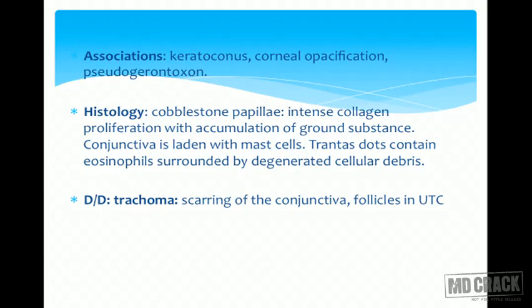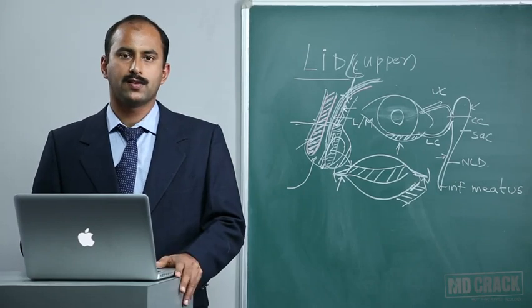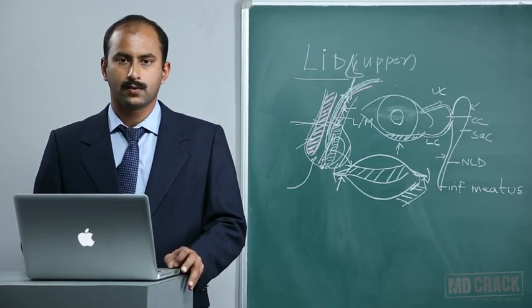The histology of cobblestone papillae shows intense collagen proliferation with accumulation of ground substance, which is difficult to reverse. The conjunctiva is laden with mast cells, and plaques contain eosinophils surrounded by degenerated cellular debris — overall a hyperreactive allergic response. The most important differential diagnosis is trachoma, with the key difference being giant follicles more than 1-2 mm in the upper tarsal conjunctiva, which are pathognomonic of trachoma and not present in vernal conjunctivitis.